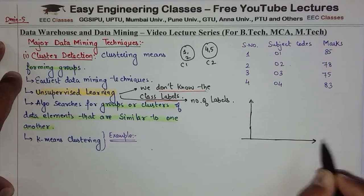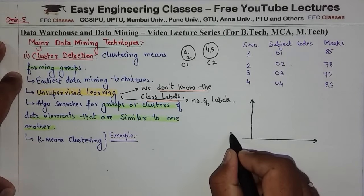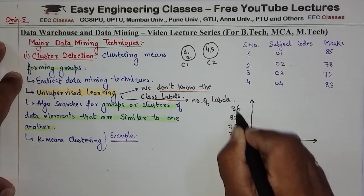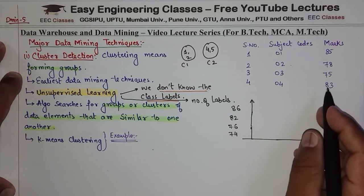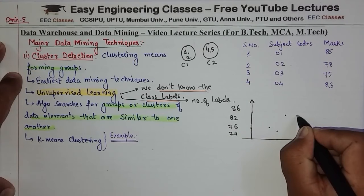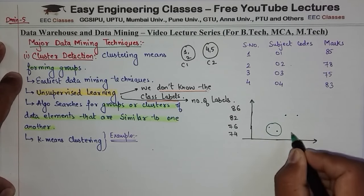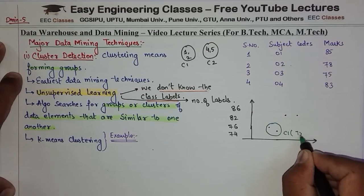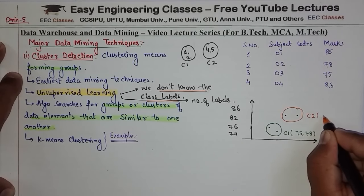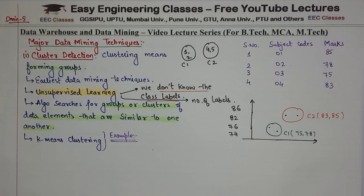We will see the methods that we use. We have a graph here. The data points 75 and 78 are very near to each other, and 83 and 85 are very near to each other. So we will make two clusters. Cluster C1 contains the marks 75 and 78, and Cluster C2 contains 83 and 85. We have made clusters that group similar-performing students together.